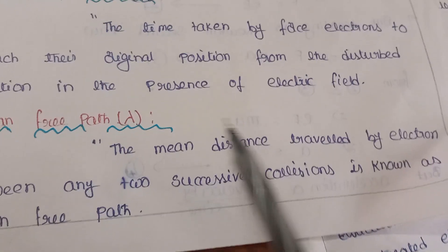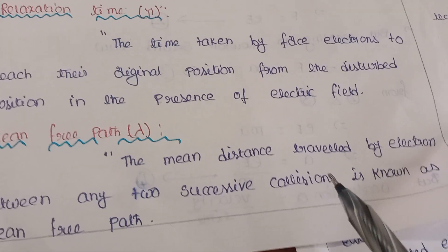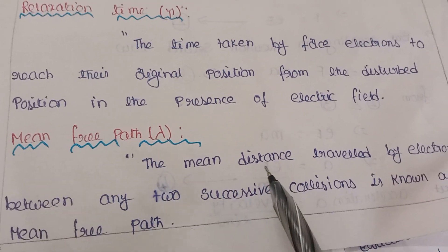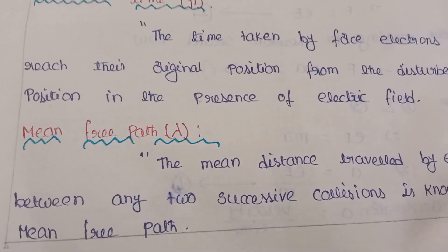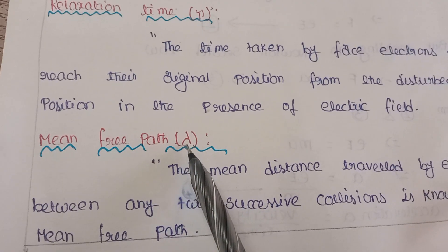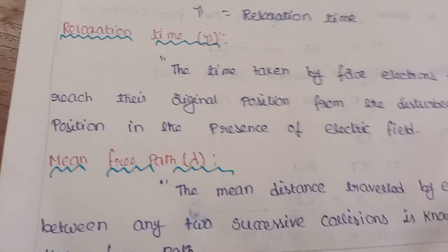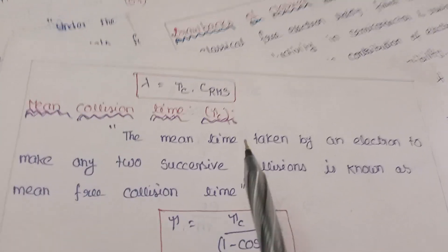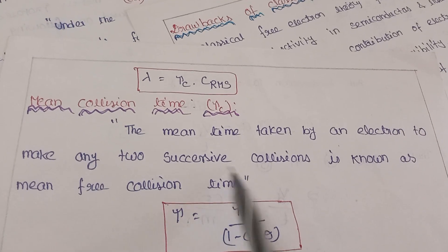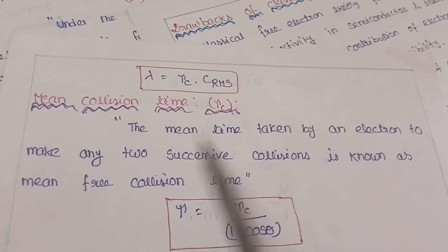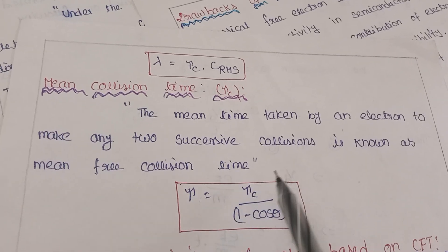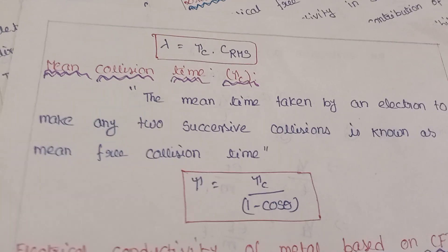Mean free path is defined as the mean distance travelled by an electron between any two successive collisions, denoted as lambda. Relaxation time is denoted as tau. Mean collision time is defined as the mean time taken by an electron between any two successive collisions.